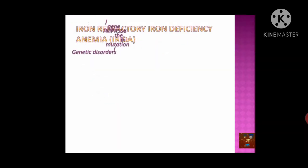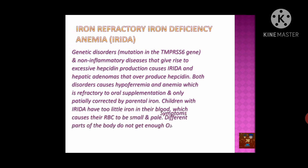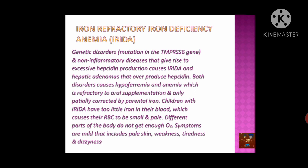Iron refractory iron deficiency anemia (IRIDA) is a genetic cause of iron deficiency anemia. The responsible gene is TMPRSS6. When there is a genetic mutation or disorder, excess hepcidin is produced, which traps iron in macrophages and reduces iron availability in the bloodstream. Children suffering from this rare genetic disease show very low energy levels, fatigue easily, have pale skin, and have insufficient oxygen in their body due to very low hemoglobin levels.